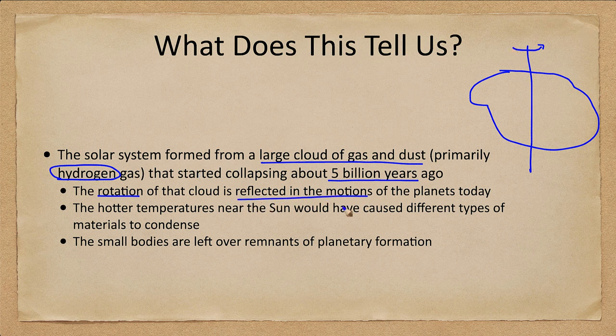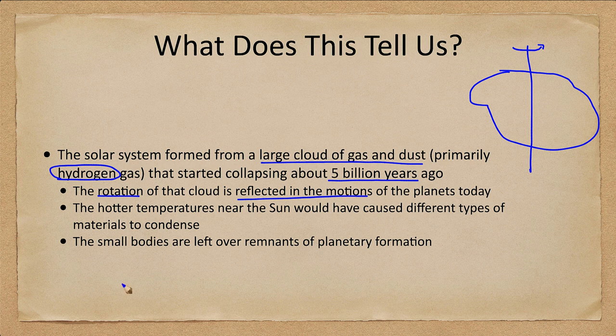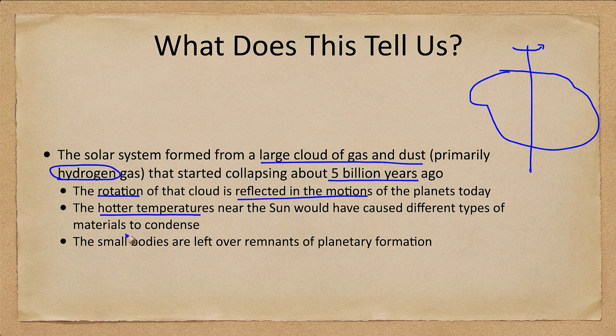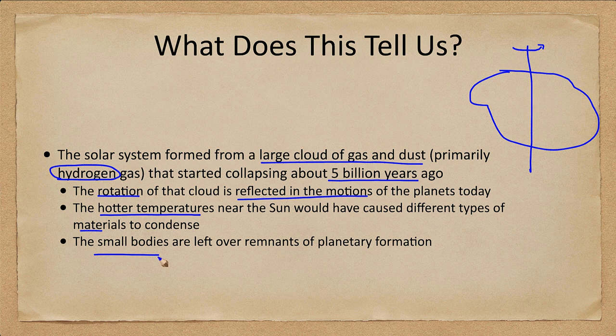Had this been rotating the other way slightly, then everything would be orbiting in the opposite direction. We look at the hotter temperatures near the Sun, which would have caused different types of materials to condense, specifically rock and metal. In the outer parts of the solar system you would have the icy material condensing. The small bodies, the asteroids and comets, are the leftover debris of planetary formation, and in fact regions where planets were unable to form.